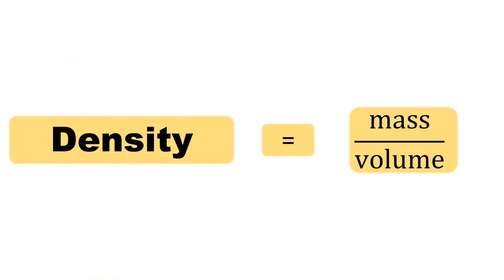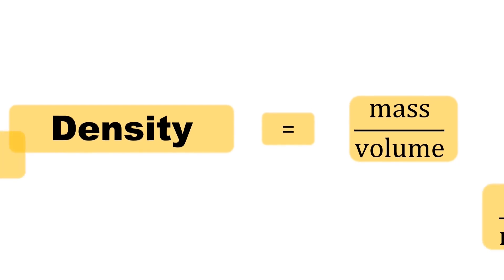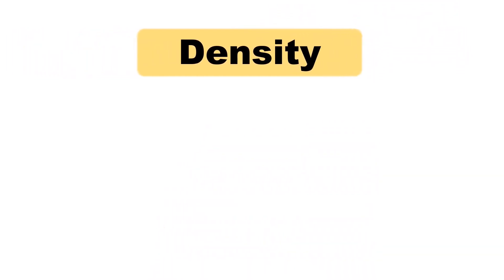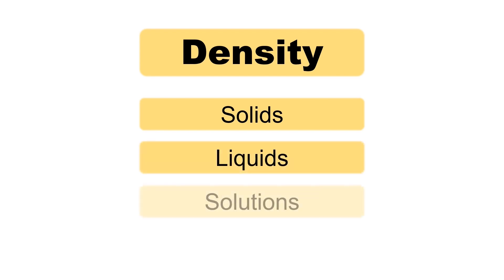The density of a substance is defined as the mass of a substance divided by the volume that substance occupies. The units are usually in grams per milliliter or grams per centimeter cubed. In this lab, we'll find the densities of solids, liquids, and solutions.